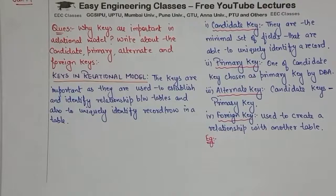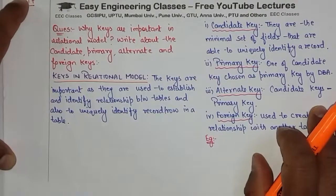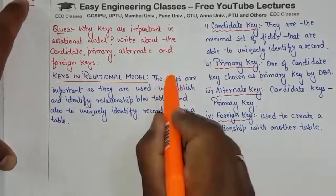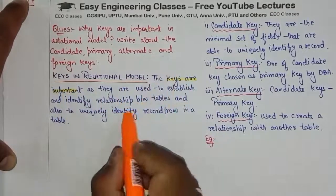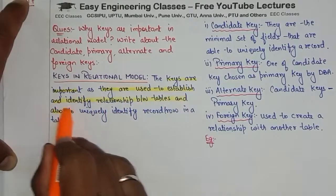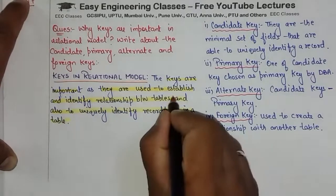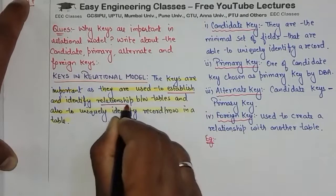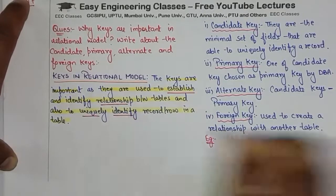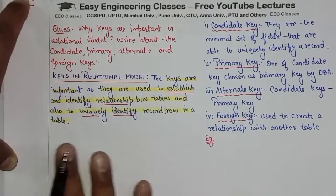Hello, so is video mein jo question hai woh hai database ki keys ke upar — why keys are important in relational model, and write about the candidate key, primary key, alternate, and foreign keys. So keys important kyon hain? They are used to establish an identifying relationship between tables and also to uniquely identify a record or row in a table. So these are two advantages: one is to maintain a relationship, and second is to uniquely identify a record in a table.